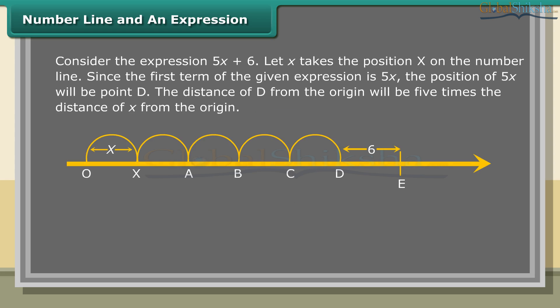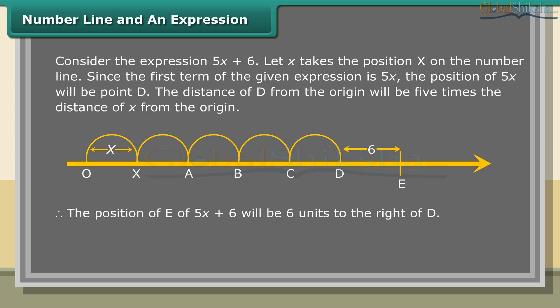Consider the expression 5x plus 6. Let x take a position on the number line. Since the first term is 5x, the position of 5x will be point D. The distance of D from the origin will be 5 times the distance of x from the origin. Therefore, the position E of 5x plus 6 will be 6 units to the right of D.